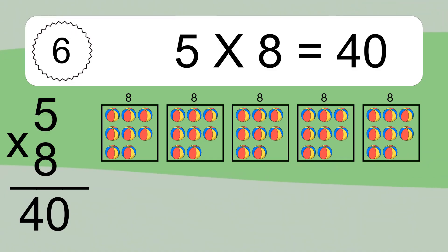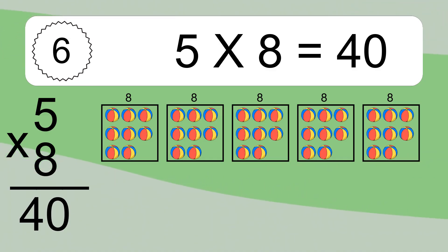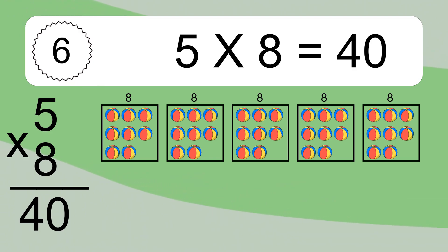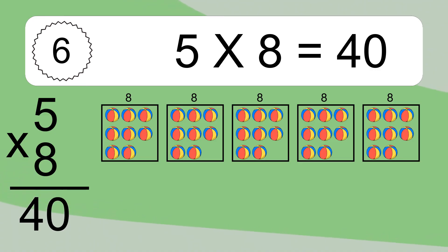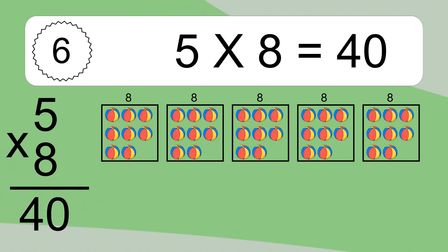We have 5 boxes, and each box has 8 colorful balls inside. If you count all the balls in all the boxes together, you will have 5 times 8 balls. This equals 40 balls.